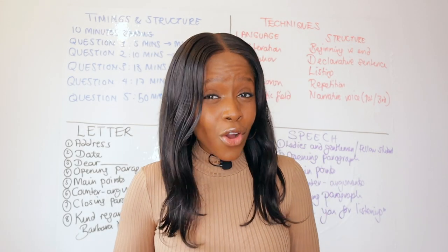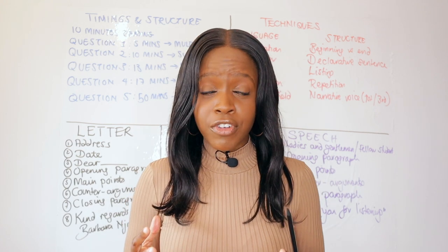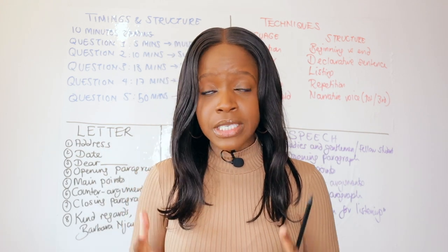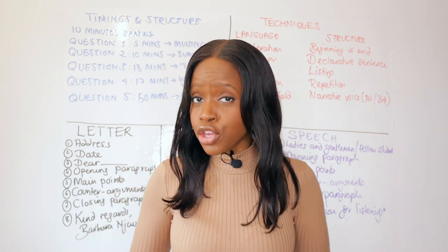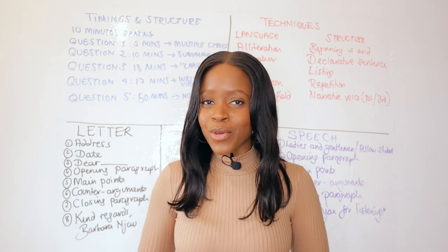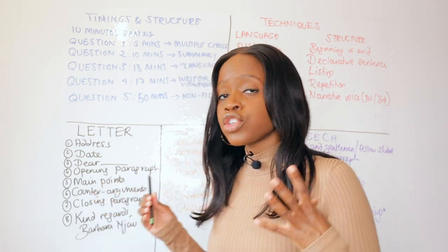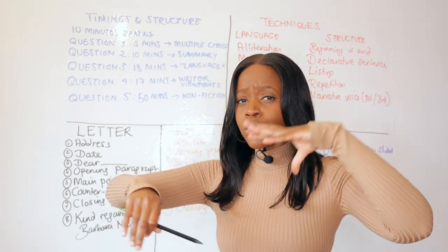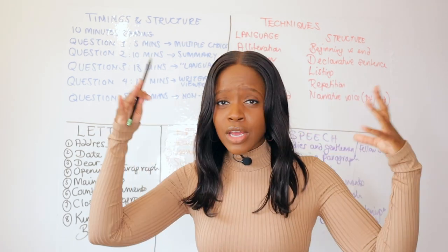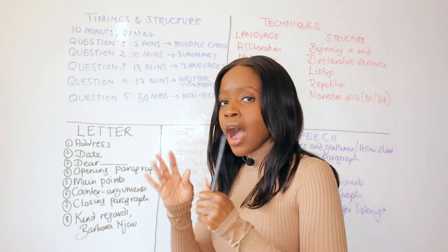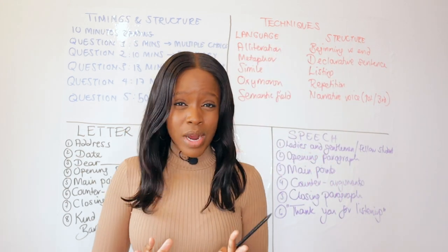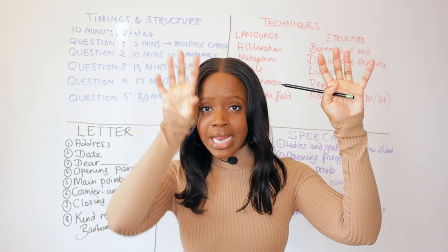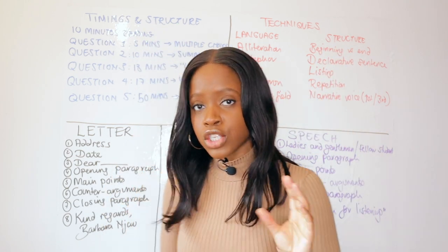The English Language Paper 2 exam is actually not that complicated to prepare for. When it comes to preparing for this paper, you can boil it down to just five steps. There are literally five key action plans you can take when it comes to preparing for English Language Paper 2, to make your life easier, because I know there are always masses of information. As you can see in this table I've created, it's actually quite simple to prepare for this exam as long as you understand those five different steps.